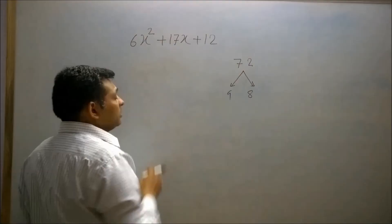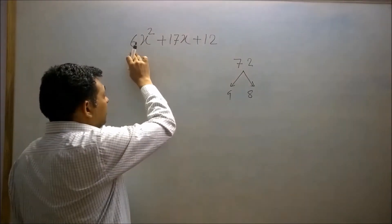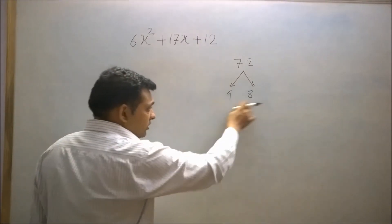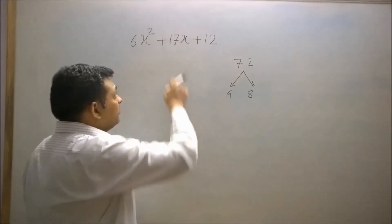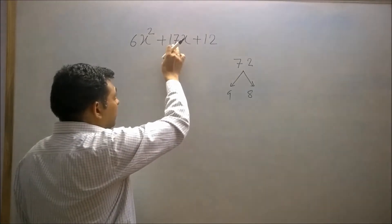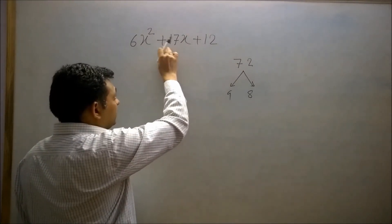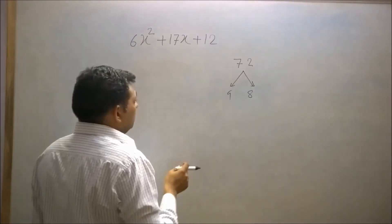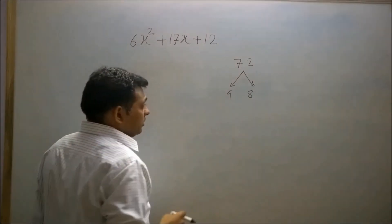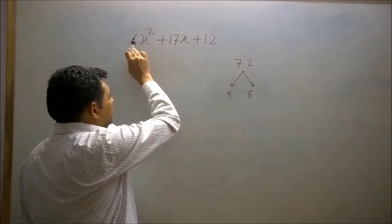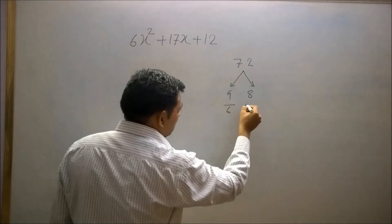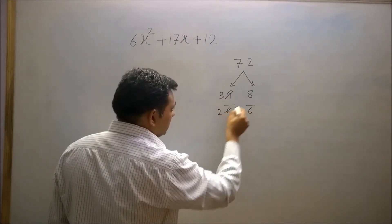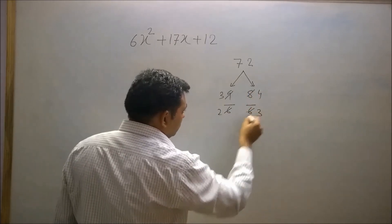Since the coefficient of x² is positive and the constant term is also positive, the sign of these two factors will be the same as the sign of the coefficient of x. Here the coefficient of x is positive, so both factors will be positive. Now divide these two numbers by the coefficient of x²: 9 ÷ 3 = 3 and 8 ÷ 2 = 4, giving us 3/2 and 4/3.